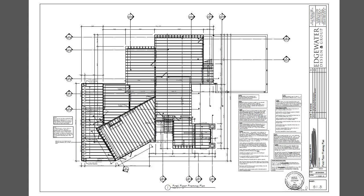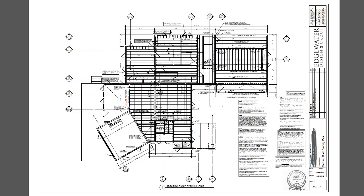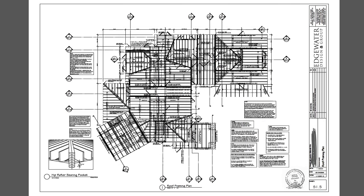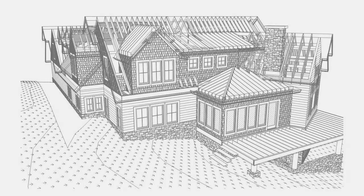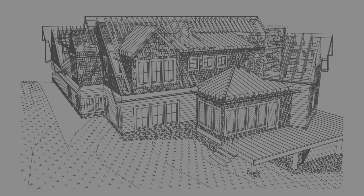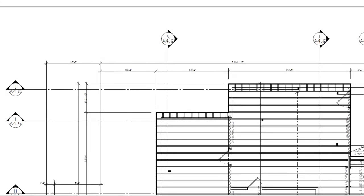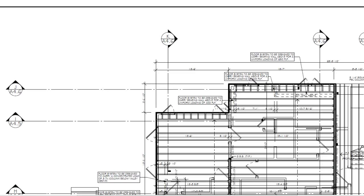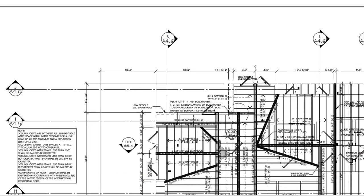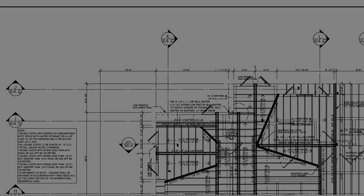Framing plans are also created during the construction documents phase. The framing plans show the size, number, and location of the structural members. Separate framing plans will be drawn or built in our 3D software for each floor as well as the roof. Joists, girders, beams, trusses, and columns are shown on these plans.